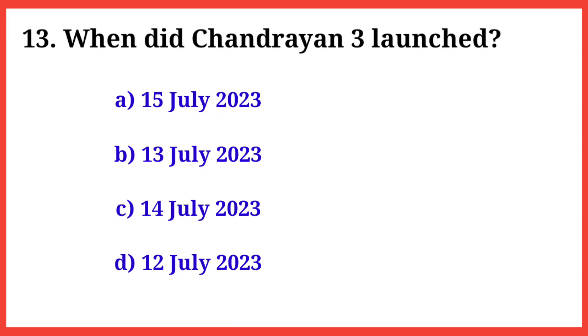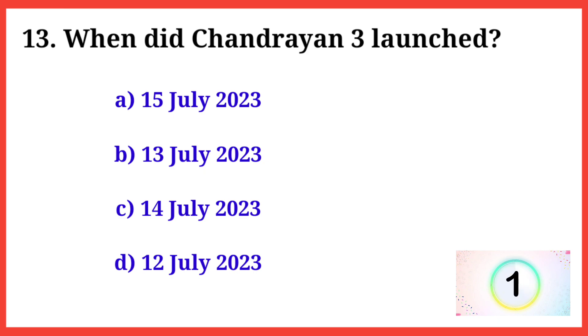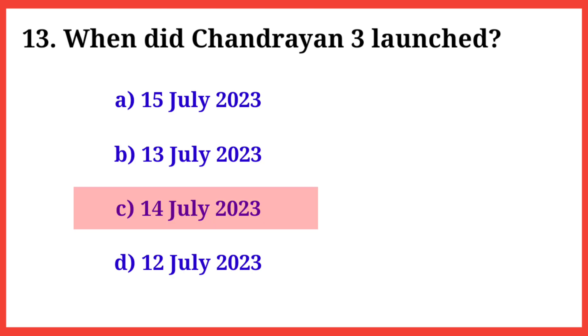Q13. When was Chandrayaan-3 launched? The right answer is option C: 14th July 2023.